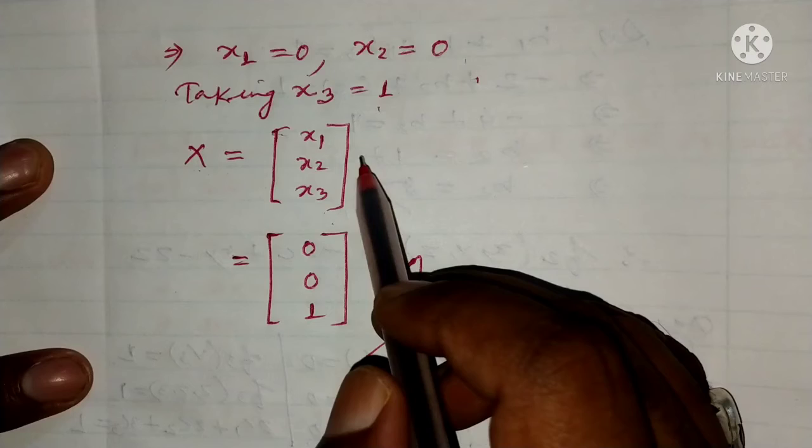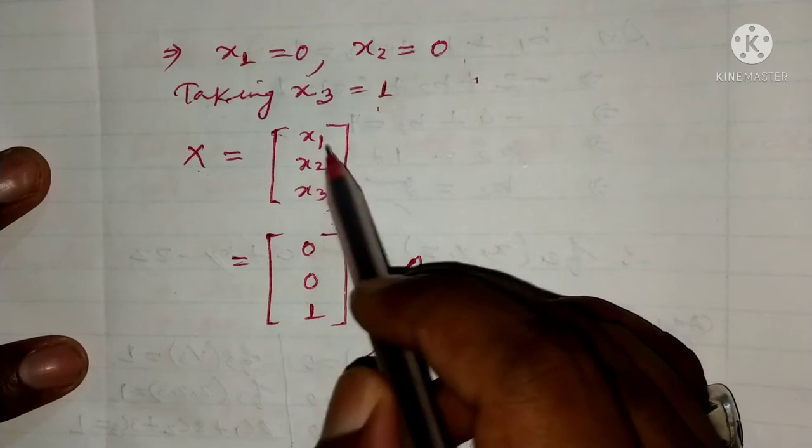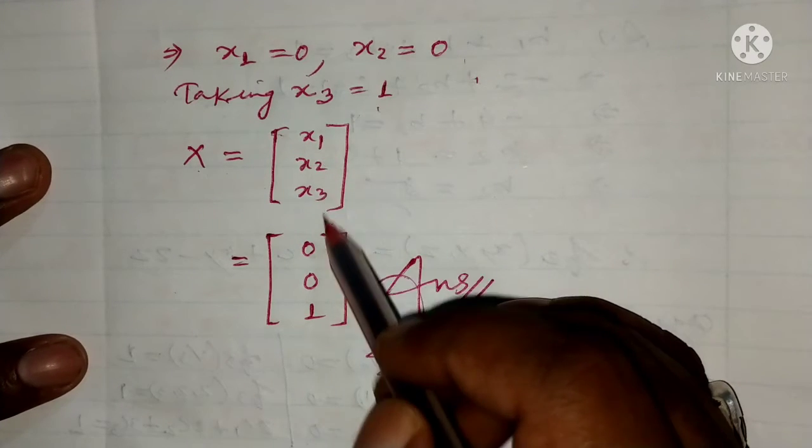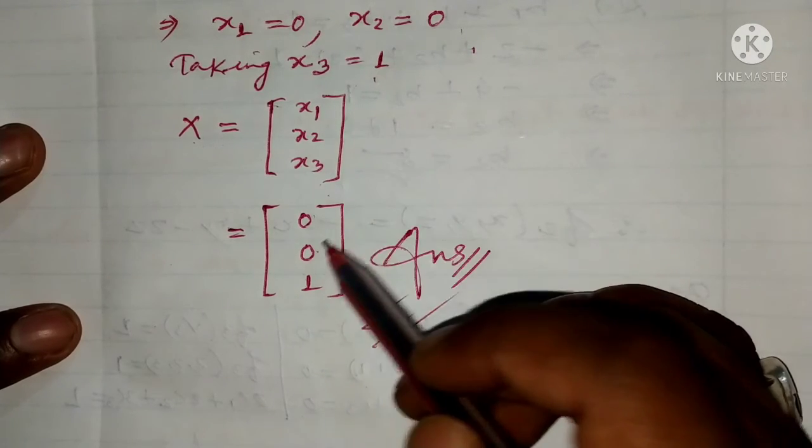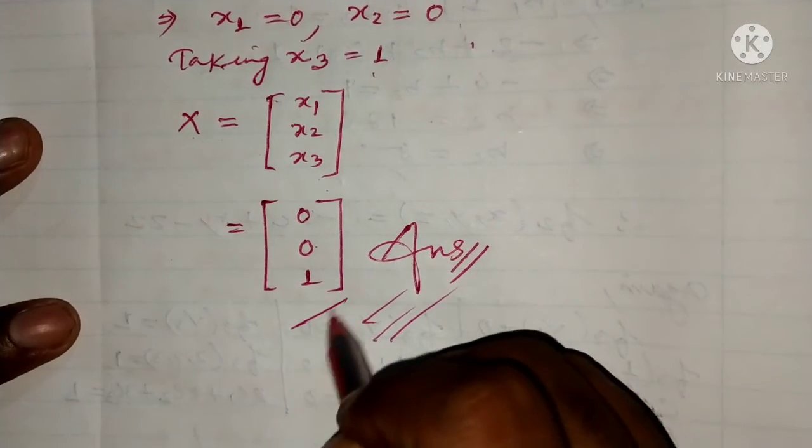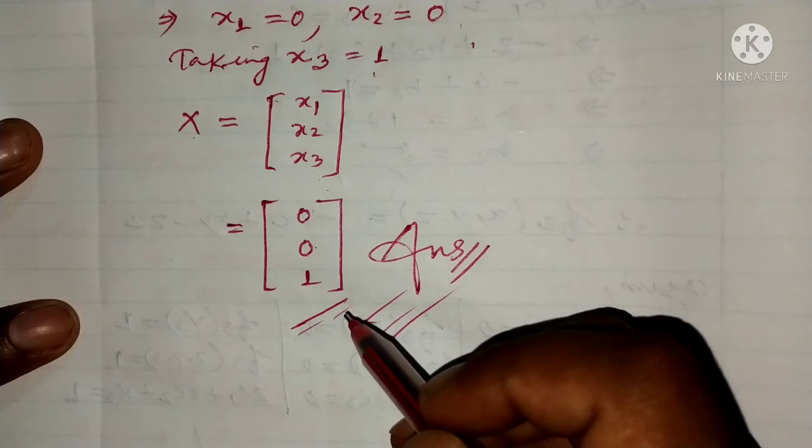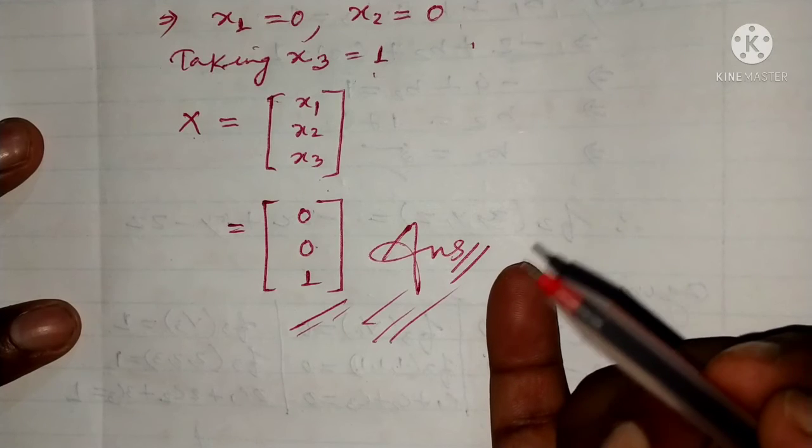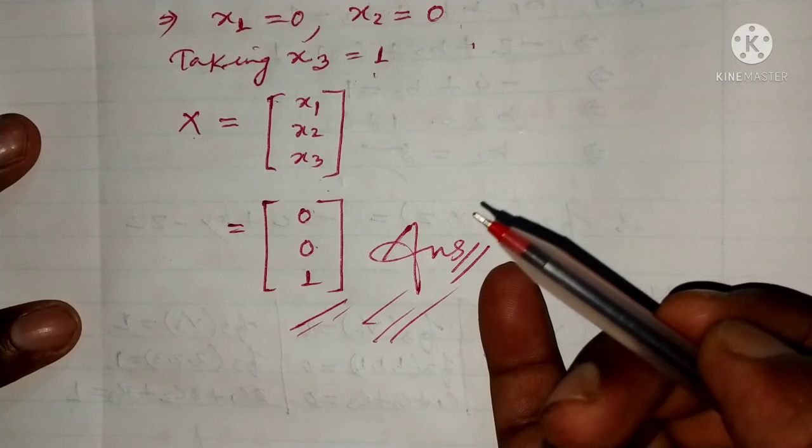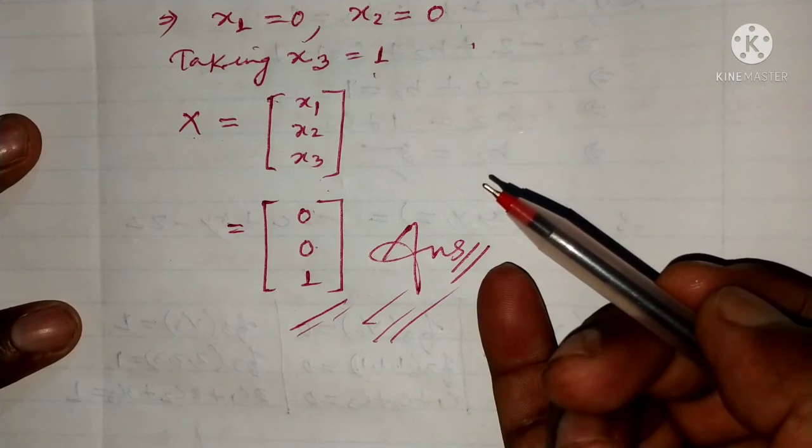So our X equals the column vector with x1, x2, x3. Putting in the values, we get x1 equals zero, x2 equals zero, and x3 equals 1. This is the eigenvector corresponding to the eigenvalue c equals 5.